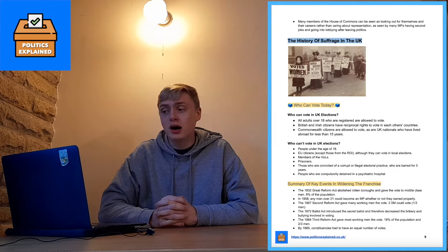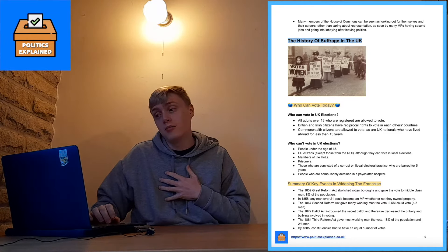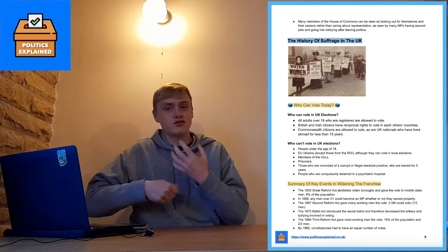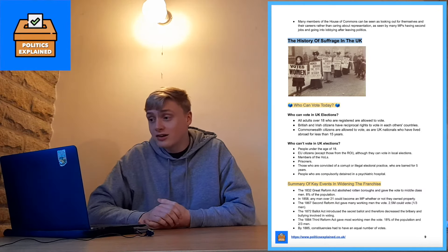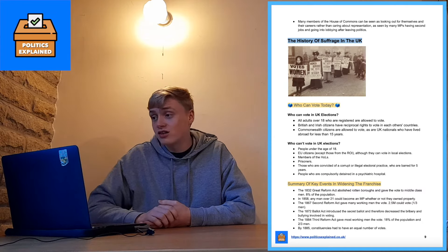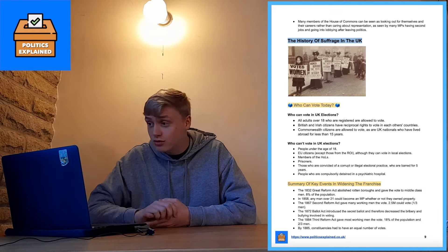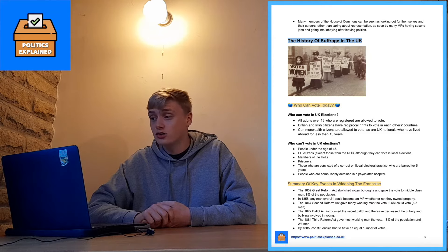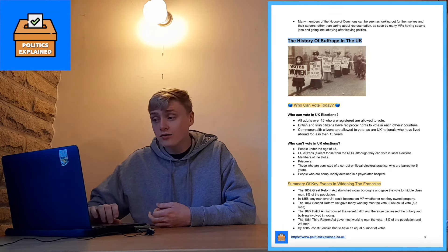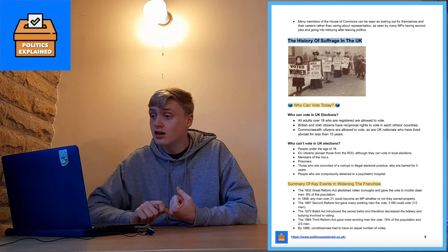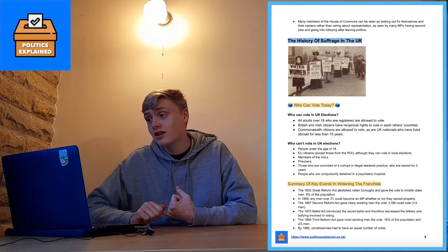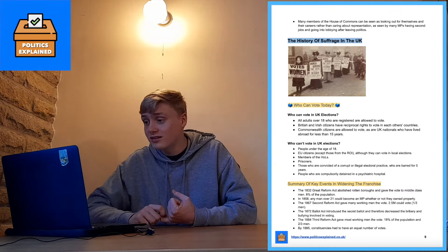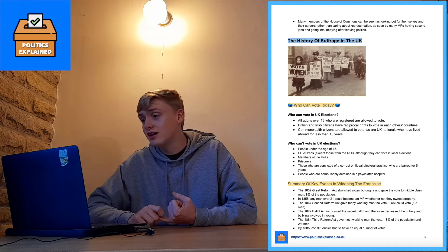Moving on to suffrage — part 1.2 of the Democracy and Participation topic. Starting with who can vote in UK elections: all adults over 18 who are registered and allowed to vote. British and Irish citizens have reciprocal voting rights. Commonwealth citizens are allowed to vote, as are UK nationals who have lived abroad for less than 15 years. Who cannot vote: people under 18, EU citizens (except those from the Republic of Ireland, though they can vote in local elections), members of the House of Lords, prisoners, those convicted of corrupt or illegal electoral practice, and people compulsorily detained in a psychiatric hospital.